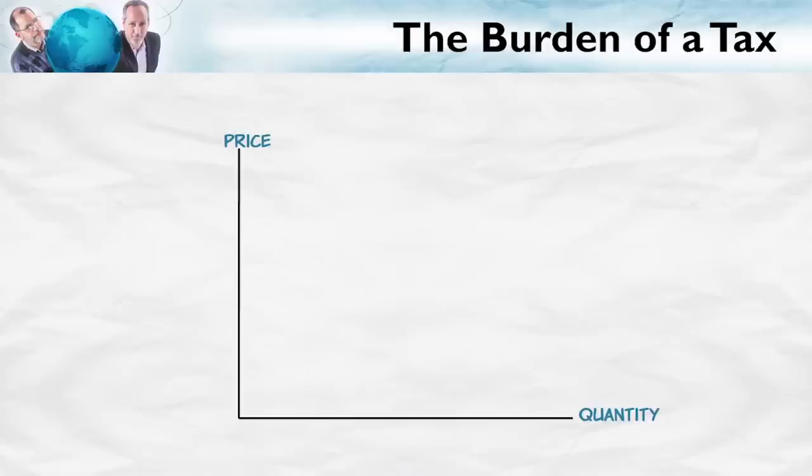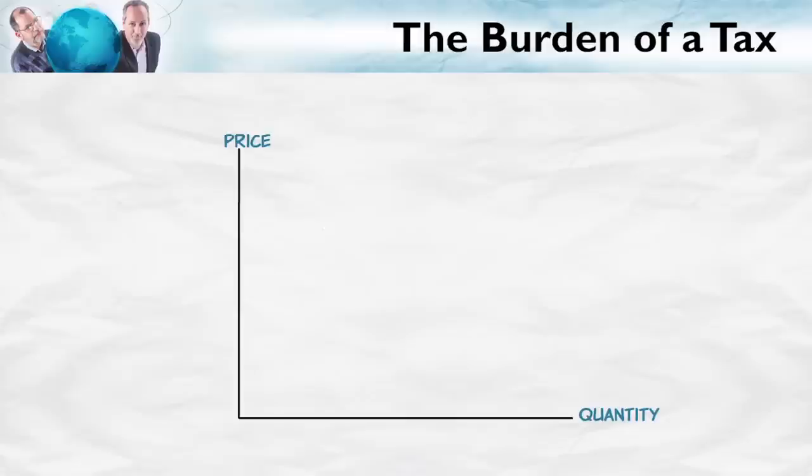Let's suppose we can't remember the rule — is it the more elastic side which bears the smaller share of the tax, or the greater share? No problem. Let's just draw the diagram and read it off. For instance, let's draw a diagram which has a pretty elastic demand curve and, relatively speaking, a pretty inelastic supply curve. Here's the price when there's no tax. Now let's look at what happens when there is a tax, and we'll use our wedge method.